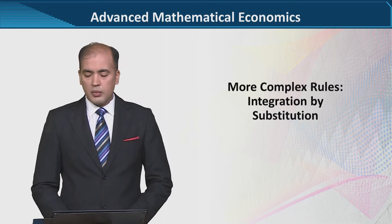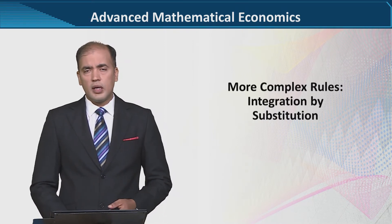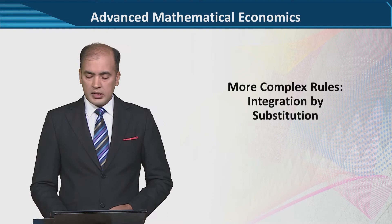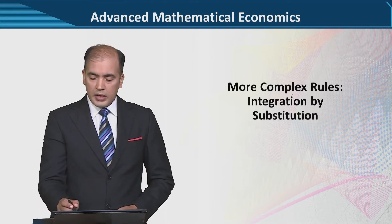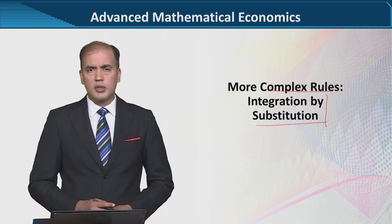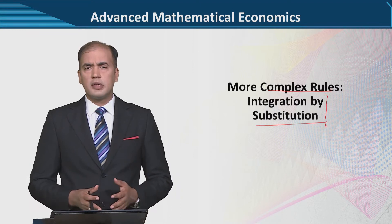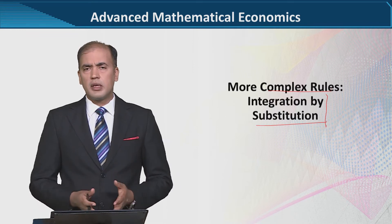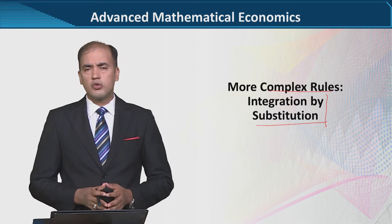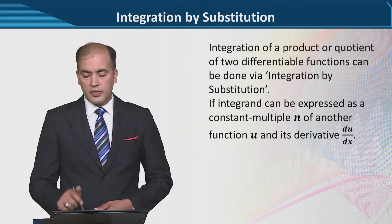So, let us do this. There are basically two possibilities in it. The first rule we are going to cover now is called a complex rule, as I have already mentioned. Its specific name is integration by substitution. You know that the names of terms correspond to their properties — as you will see, we are performing a substitution in it. Now let us get into the details of it.